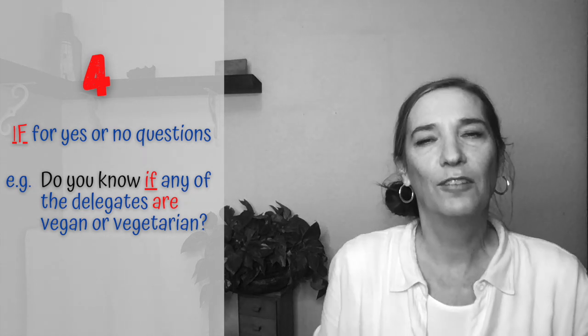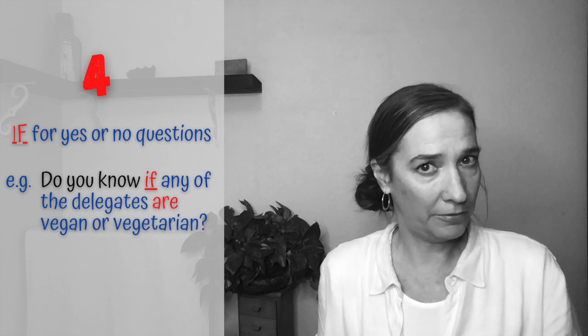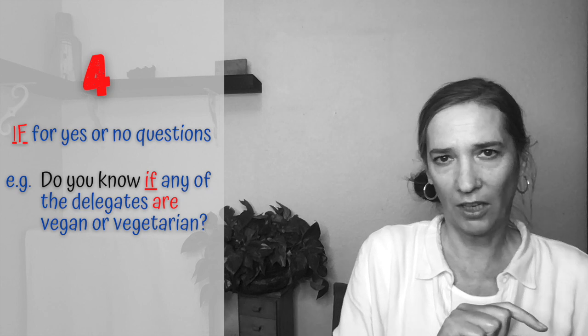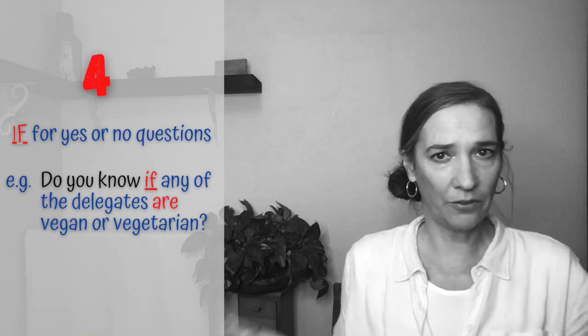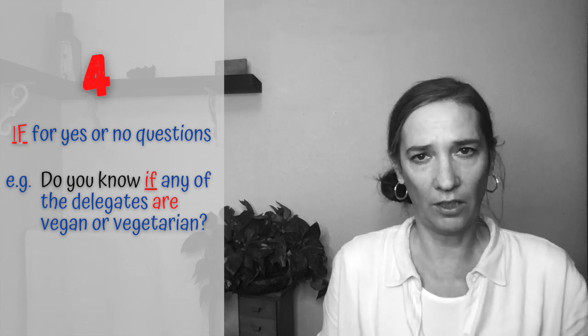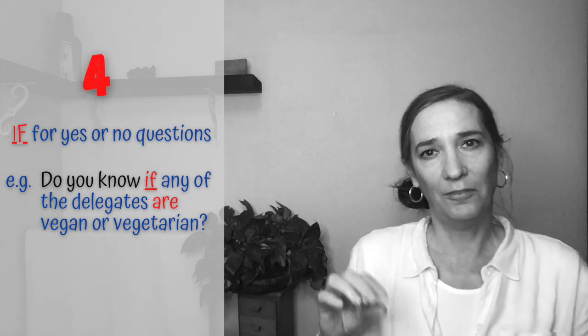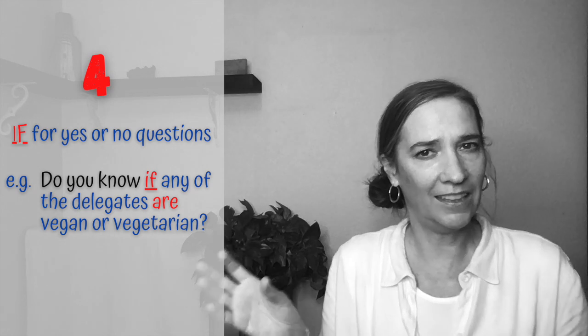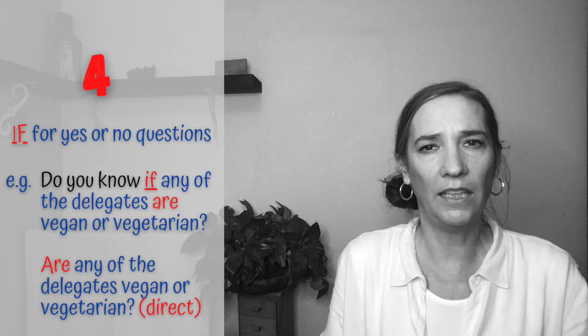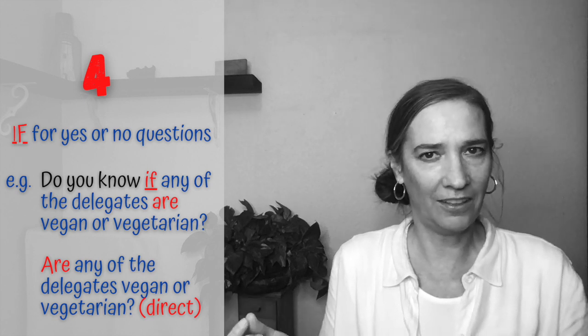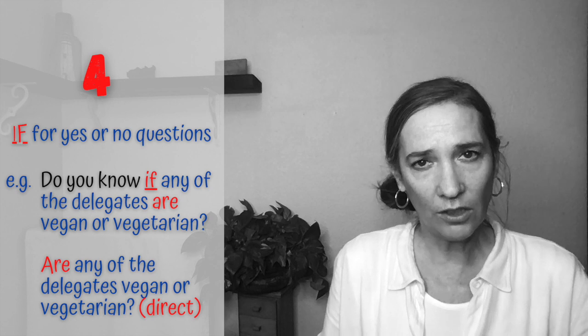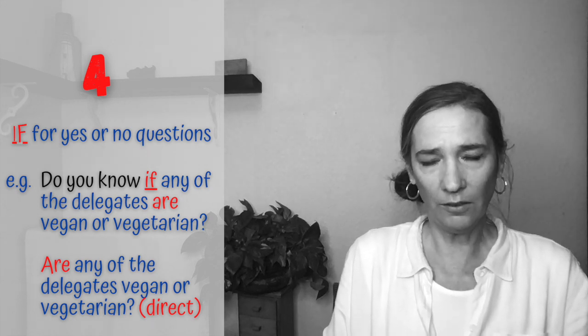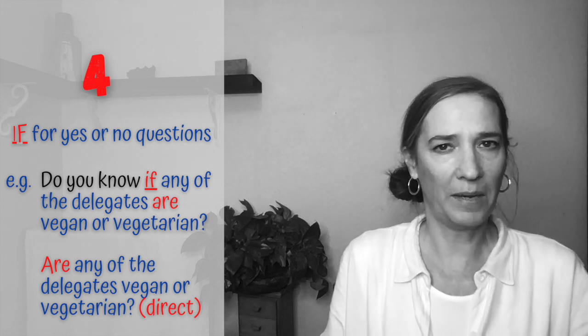Rule number four: when we're asking a yes or no question, we need the word if in an indirect question. For example, do you know if any of the delegates are vegan or vegetarian? Here we have our polite introduction — do you know — and then if, because we're expecting a yes or no answer, and then statement word order: any of the delegates are vegan or vegetarian? If we ask this question directly, it would be, are any of the delegates vegan or vegetarian? So in the indirect question, there's no subject-verb inversion. We use if when we're expecting a yes or no answer.